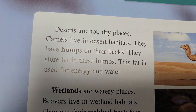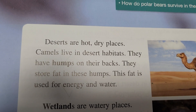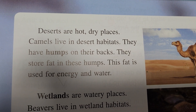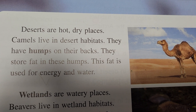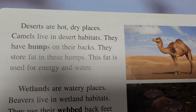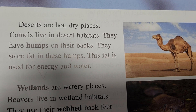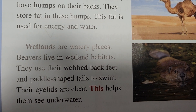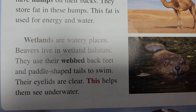Deserts are hot, dry places. Camels live in desert habitats. They have humps on their backs. They store fat in their humps. This fat is used for energy and water. Wetlands are watery places.